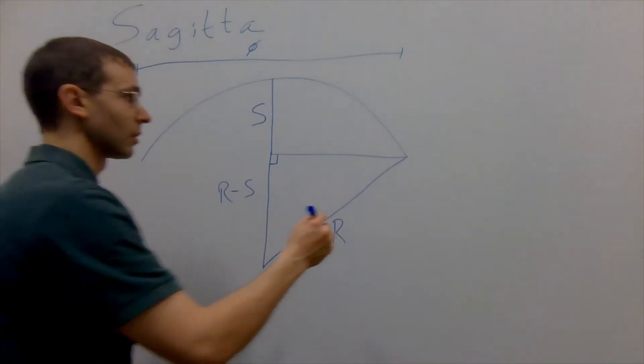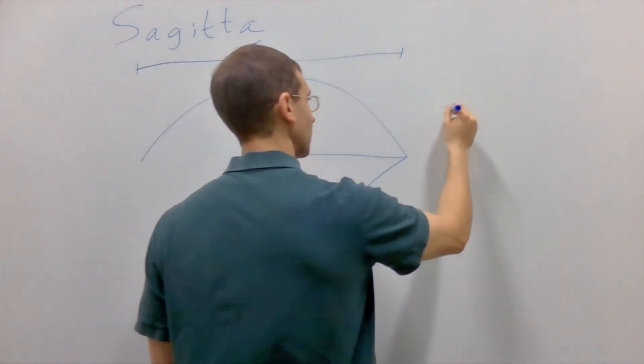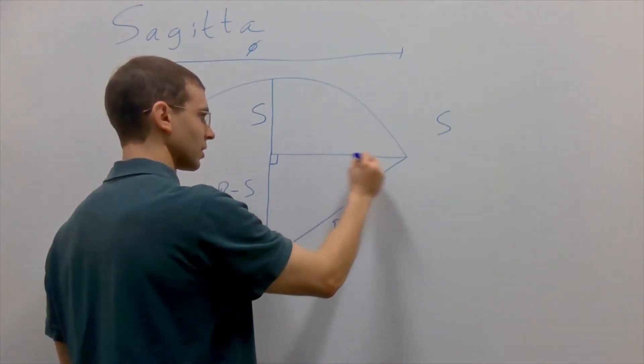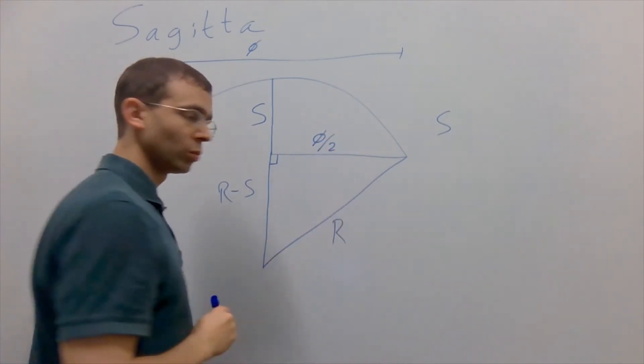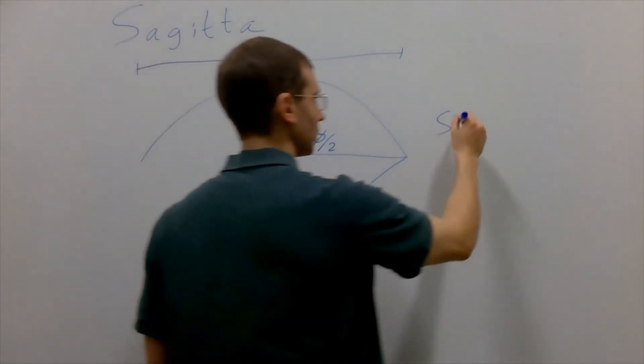So if we want to have an expression for the SAG in terms of these other parts, let's label this side of this triangle as well. It is d/2.